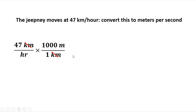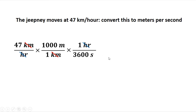So we write 1 kilometer equivalent to 1,000 meters — cancel km. For hours to seconds: one hour equals 60 minutes, and one minute equals 60 seconds, so one hour is equivalent to 3,600 seconds. Cancel hours. Our remaining unit is meters per second.